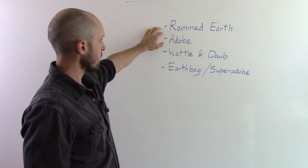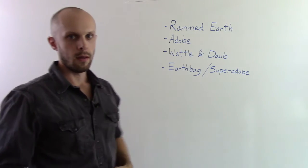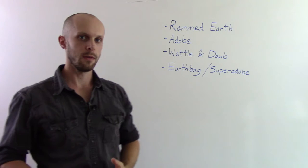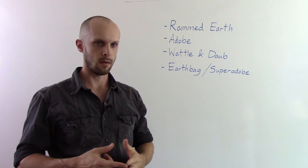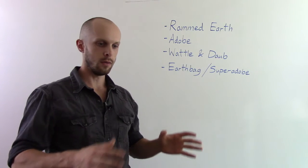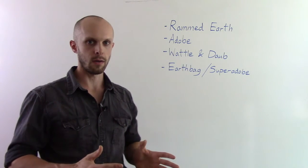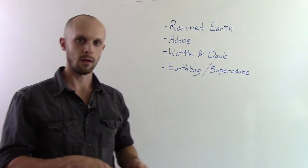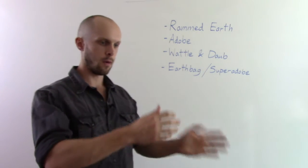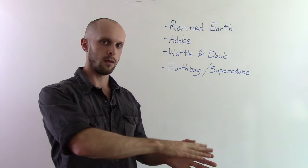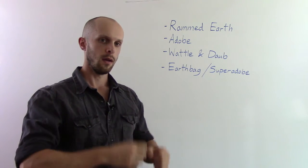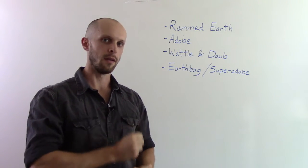So the first one is called rammed earth. And basically what rammed earth is, is loose soil and aggregate like sand put into a form, much like a concrete form where you would pour cement concrete into. So you have a form on either side of the wall. You pour the soil and aggregate mix into the form, and then you compact it down and ram it in there.